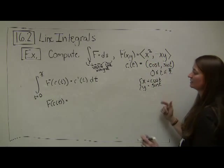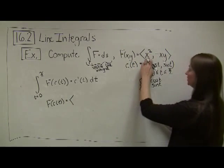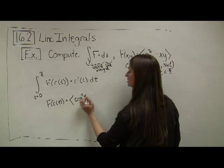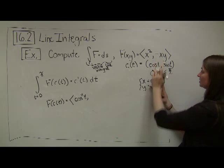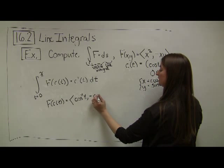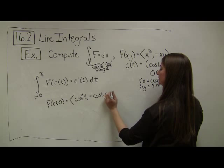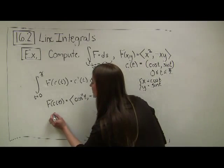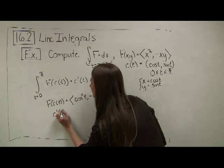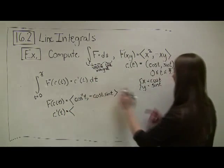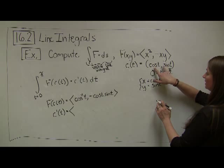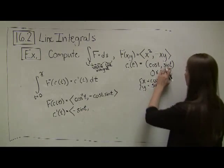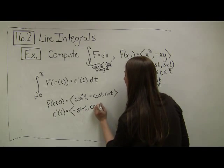So f of c of t equals: the x component squared is cosine squared of t, and the y component is negative cosine t times sine t. That's my f of c of t chunk. I also need c prime of t, which is the derivative of c of t: the derivative of cosine is negative sine t, and the derivative of sine is cosine t.